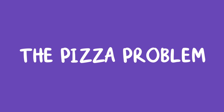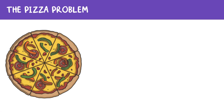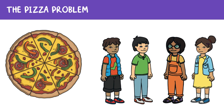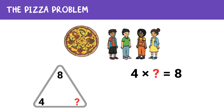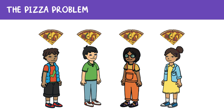Now, when might you need to use fact families? Fact families aren't just for math class — they show up in real life too. If you have eight pieces of pizza and four friends, how many slices does each person get? You can use a fact family starting with eight and four to solve this problem. We need to find the missing number. We know that 4 times 2 equals 8, so using the inverse relationship, we can say that 8 divided by 4 equals 2. So each friend gets two slices of pizza.